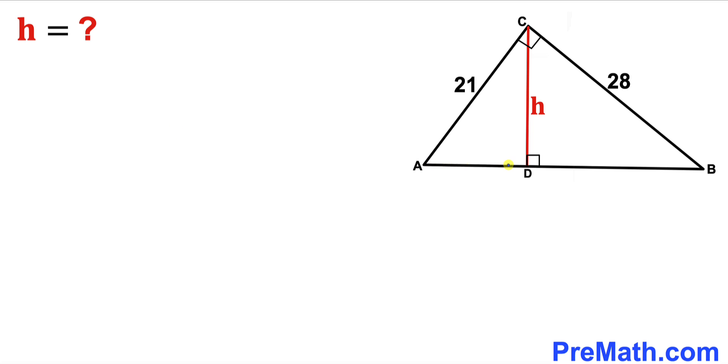Let's go ahead and get started with the solution. We know that this triangle ABC is a right triangle and its side lengths are 21 and 28, and now we are going to figure out this longest leg.